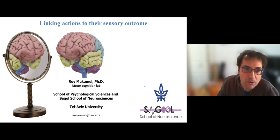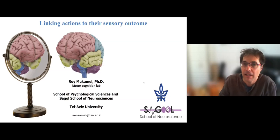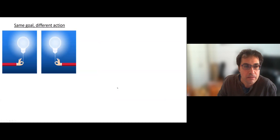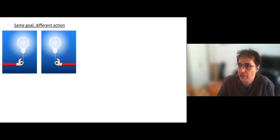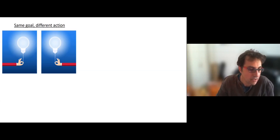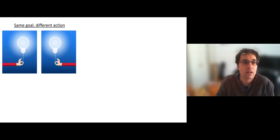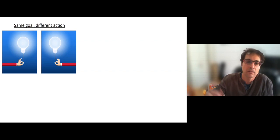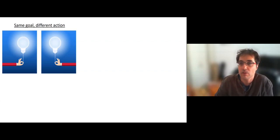Today I'll talk about linking actions to their sensory outcomes. A salient feature of any voluntary action is the underlying desire or link to consequences in the world. Unlike reflexes that are stereotypical, there are multiple ways in which the brain can use its neural networks to connect between actions and sensory consequences.